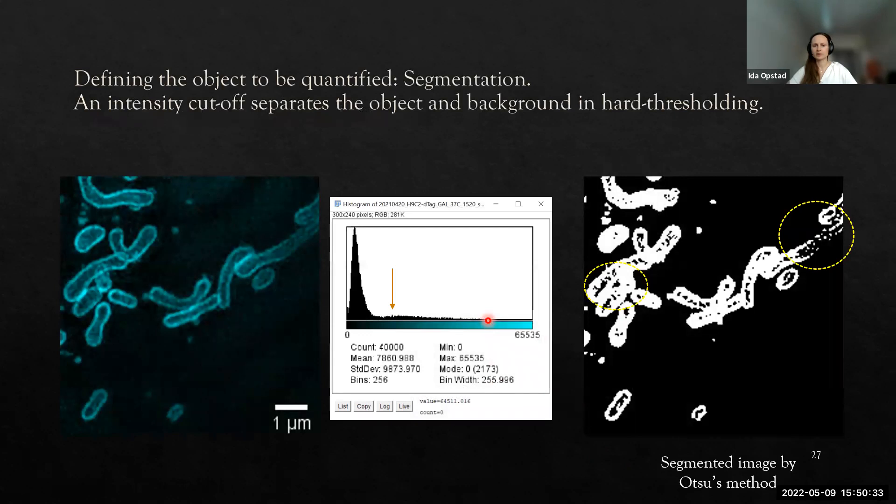The first thing we can do is compare with hard thresholding. To quantify anything in the image, we need to clearly define the object we want to quantify. The simplest method is just to have a hard thresholding method where intensities above a certain threshold are counted as objects and below are counted as background.